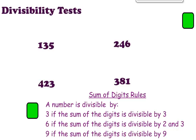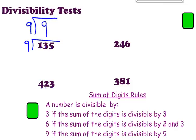Next we're going to look at rule number 9, which is very similar to 3. A number is divisible by 9 if the sum of the digits is divisible by 9. Going back to 135: 1 plus 3 plus 5 equals 9. Is 9 divisible by 9? Yes — which means 135 can be divided by 9. For 423: 4 plus 2 plus 3 equals 9. Is 9 divisible by 9? Yes — so that number is also divisible by 9.